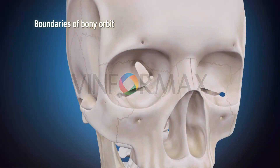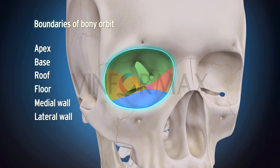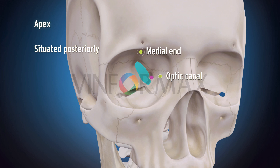The bony orbit contains an apex, base, roof, floor, medial and lateral wall. The apex is situated posteriorly between the optic canal and the medial end of the superior orbital fissure.